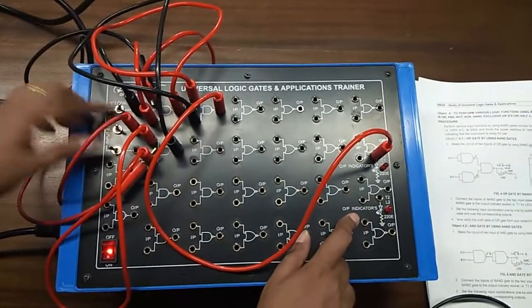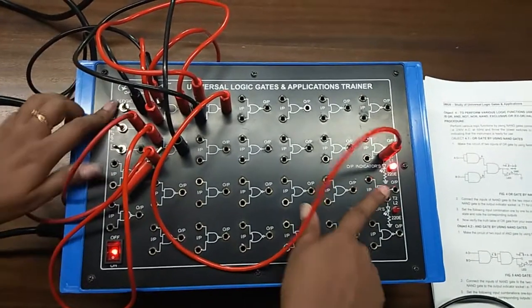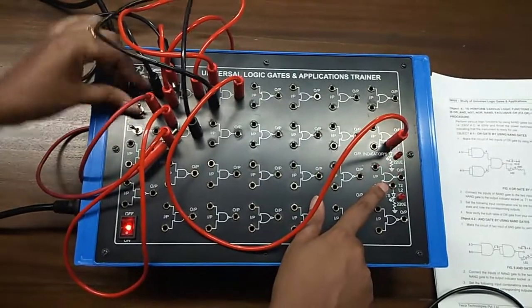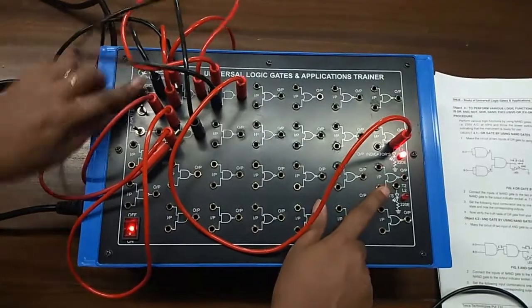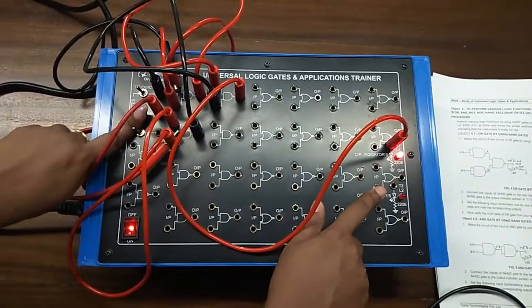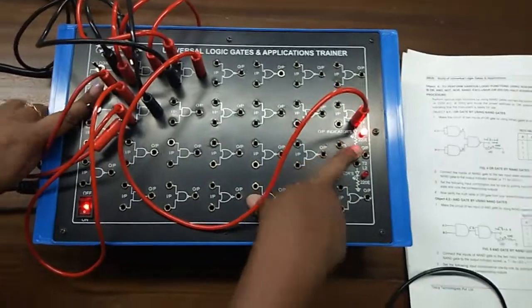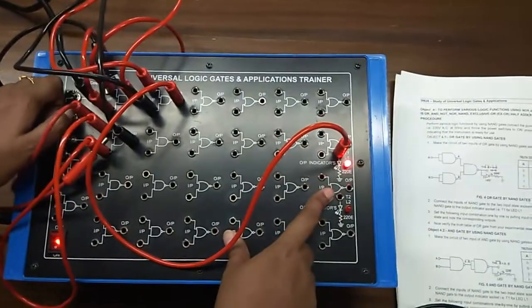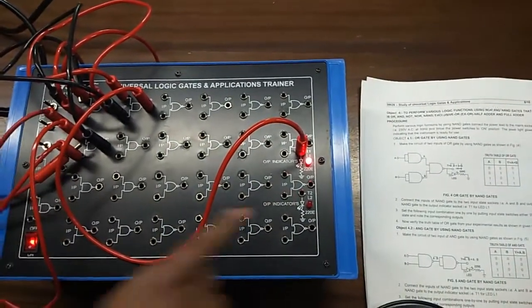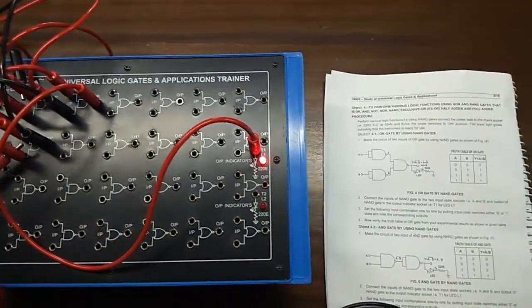Now my A is 0 and my B is 1 — output is 1. Now my both inputs are 1 and my output is 1.